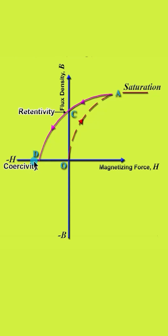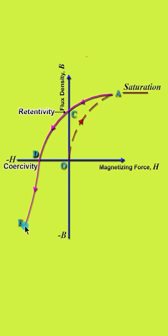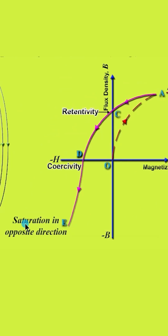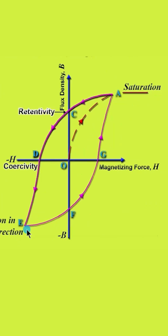The coercive force or coercivity of the material is represented by OD on the curve. When the magnetizing force is reduced further in the negative direction, the curve follows the path DE, and at E it is saturated in the opposite direction. If the magnetizing force is then reversed towards the positive direction, the curve follows the path EFGA, completing the hysteresis loop.